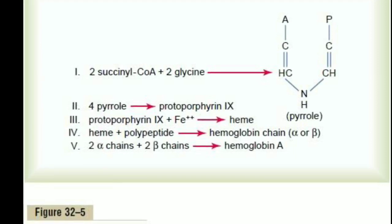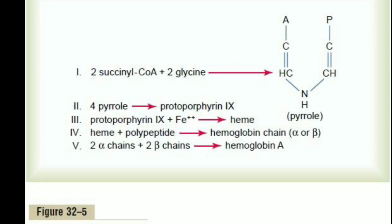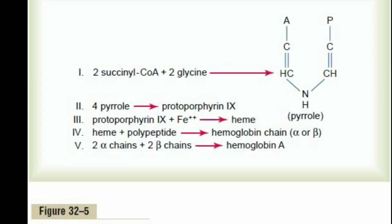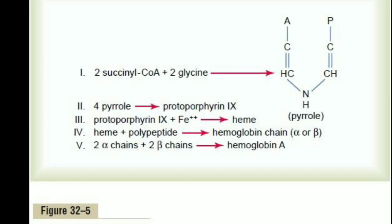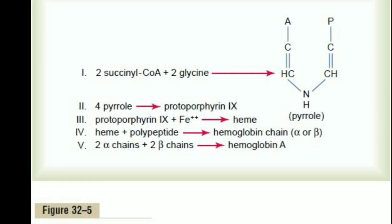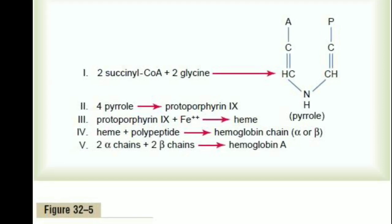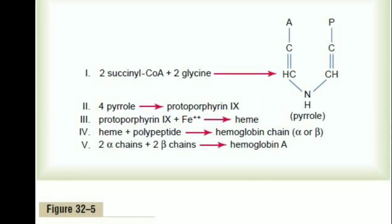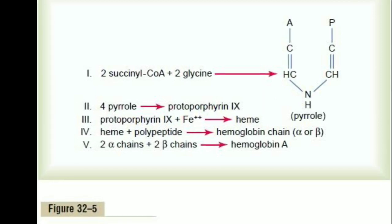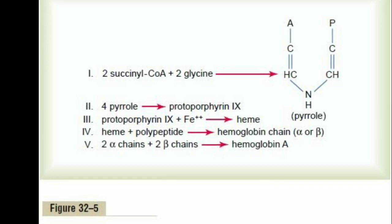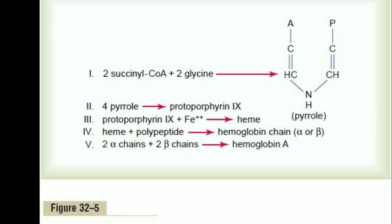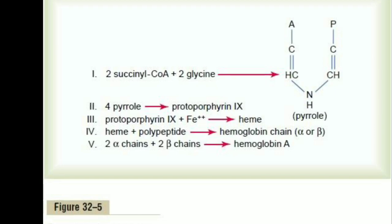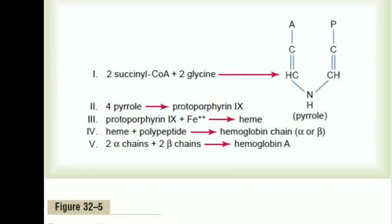After formation of the heme molecule, each heme combines with a long polypeptide chain. Globin is synthesized by ribosomes to form a subunit of hemoglobin called a hemoglobin chain. Four of these hemoglobin chains then bind together loosely to form a whole hemoglobin molecule.